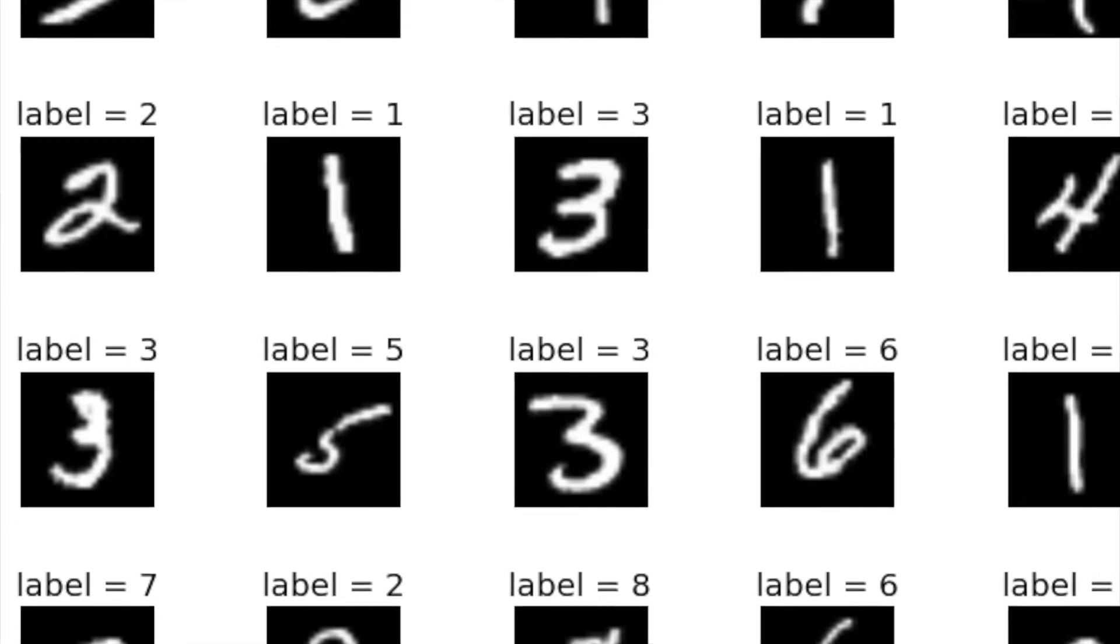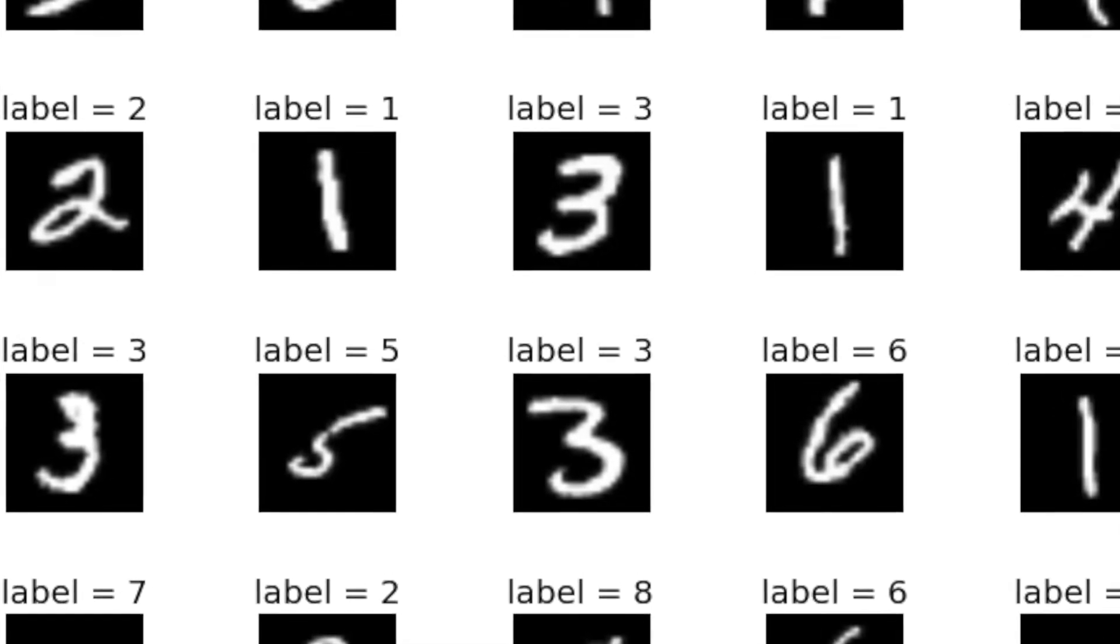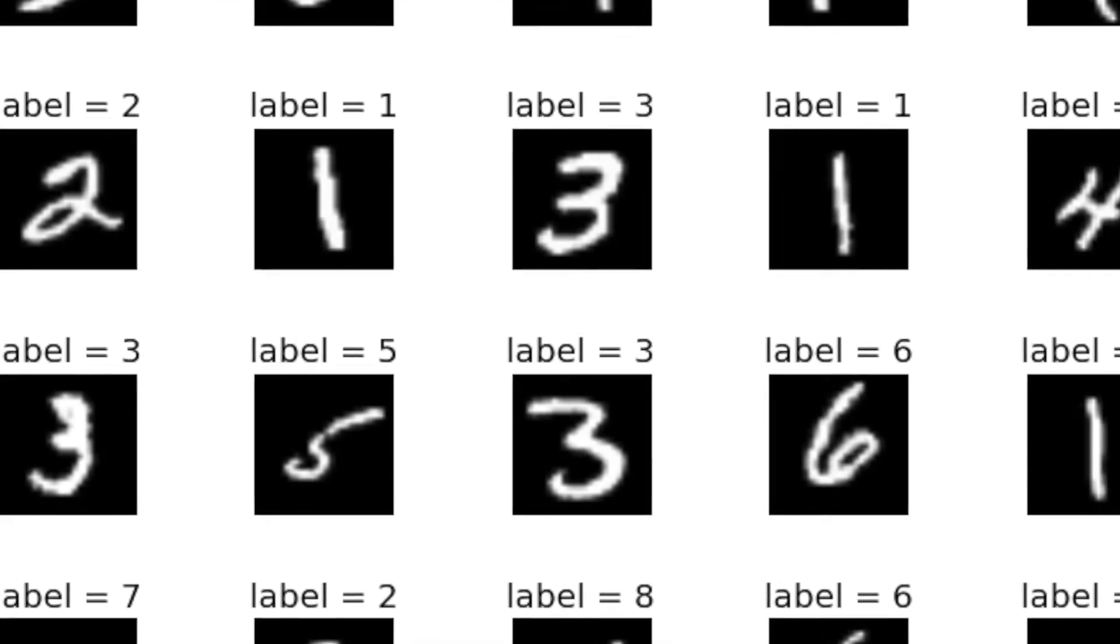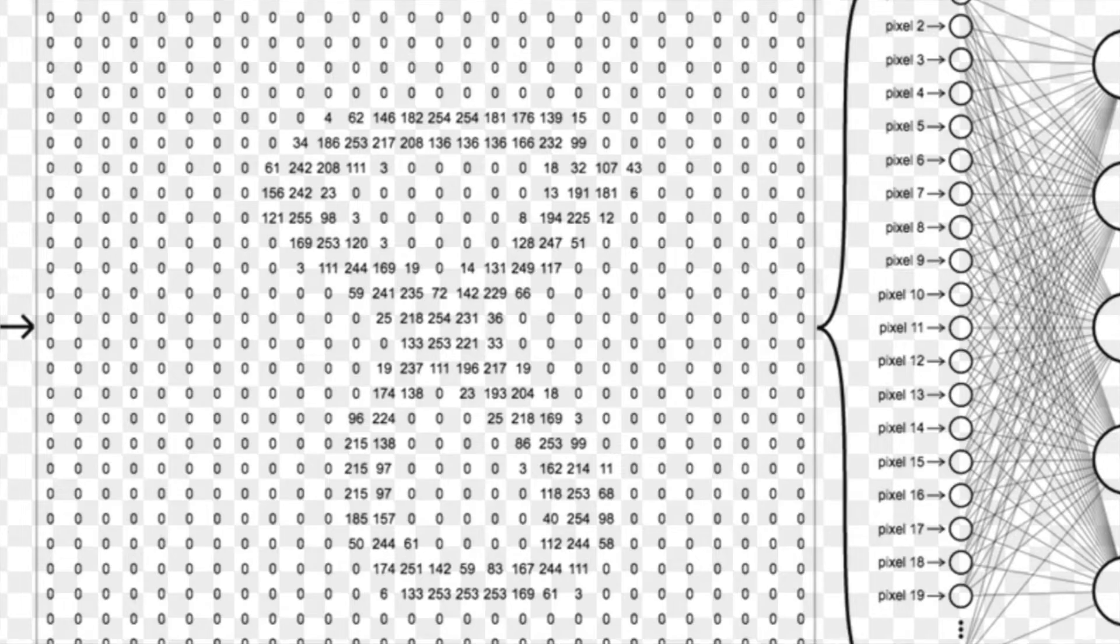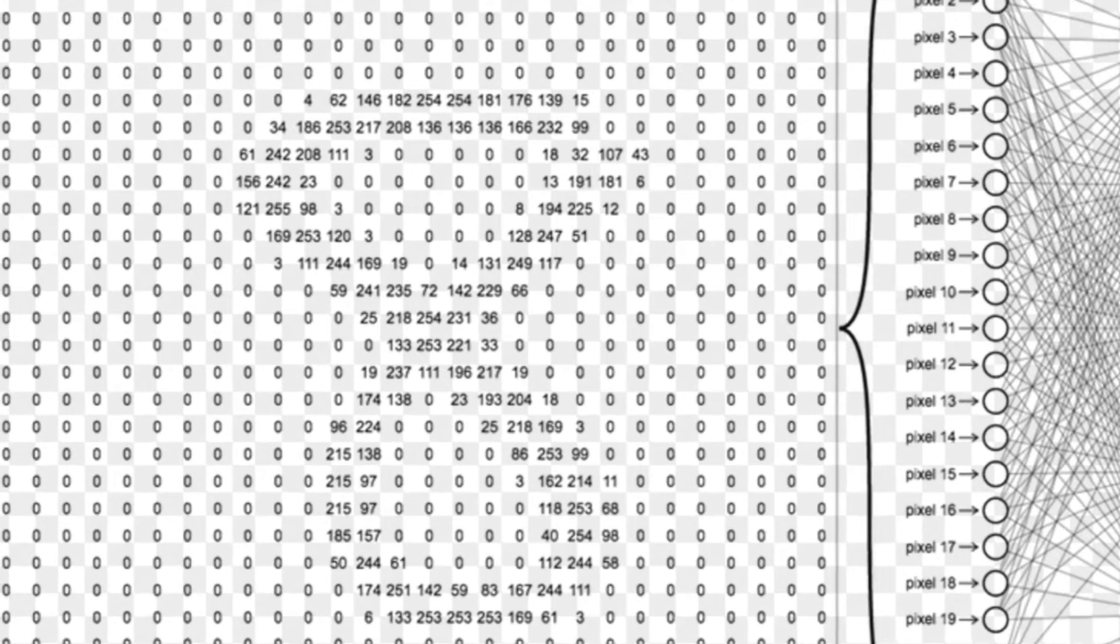This is more famously called the MNIST dataset problem which has been extensively researched in the machine learning world. The input data is going to consist of grayscale images represented by 28 by 28 pixel matrix where each pixel value is an unsigned 8-bit integer in the range 0 to 255.